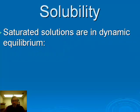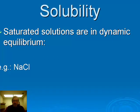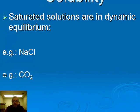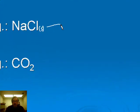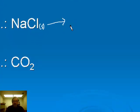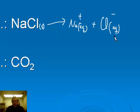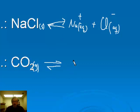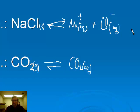All saturated solutions are in dynamic equilibrium of some kind. For example, sodium chloride starts out as a solid and will dissociate when it dissolves, producing sodium ions in aqueous solution and chloride ions in aqueous solution. But eventually, if you put enough salt in, this process reverses itself and you reach dynamic equilibrium. CO2, which is a gas, can dissolve in water too, but it also reaches dynamic equilibrium with aqueous CO2. The primary difference is that the sodium and chloride ions exist separately when dissolved, while CO2 molecules are just spread out from each other when they dissolve.